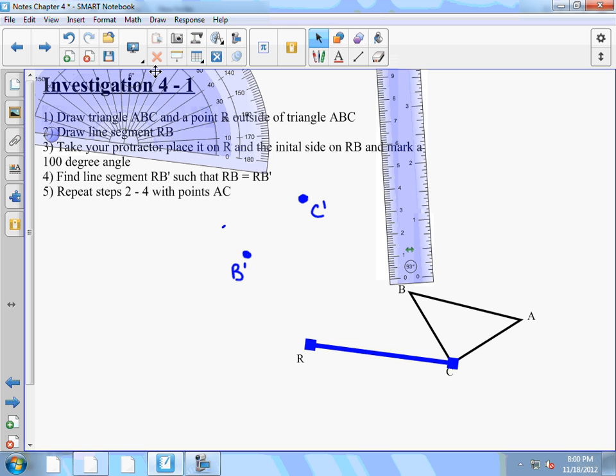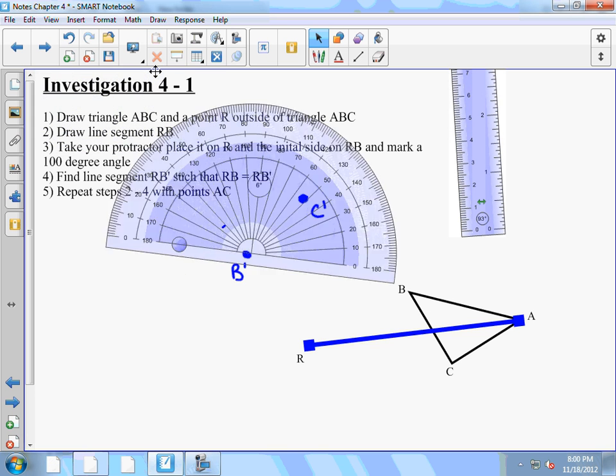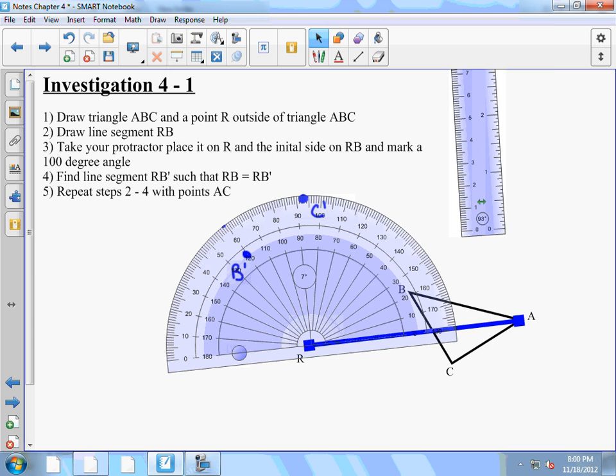Again, we'll go back to step two, except this time we're going from R to A. Draw that line segment. Again, measure a 100-degree angle and mark off 100 degrees.